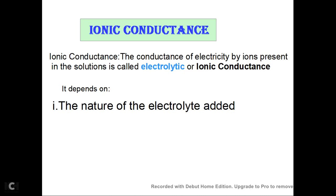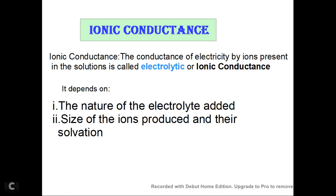The factors affecting ionic conductance include: the nature of the electrolyte added, the ions produced, and the solvation of ions. When we add an electrolyte, the ions carry the charge through the solution, and the nature of the electrolyte determines how many and what size ions are produced.